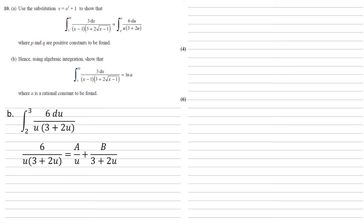If we did some cross multiplication on the right-hand side to change those two fractions back into one fraction, we would have to multiply the a by the 3 plus 2u, and we'd have to multiply the b by the u, and then this would all be equal to the numerator on the left, the 6. So we've got a times 3 plus 2u plus bu equals 6. If we rearrange this so that we've got numbers and multiples of u separately, we get that 3a plus 2a plus b times u is equal to 6.